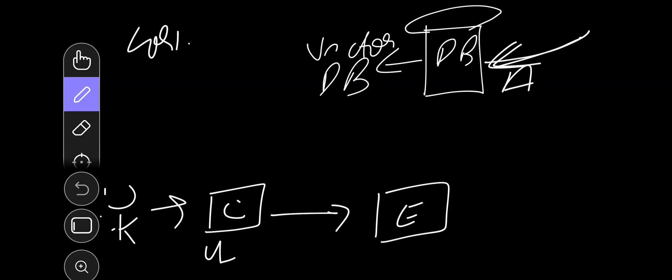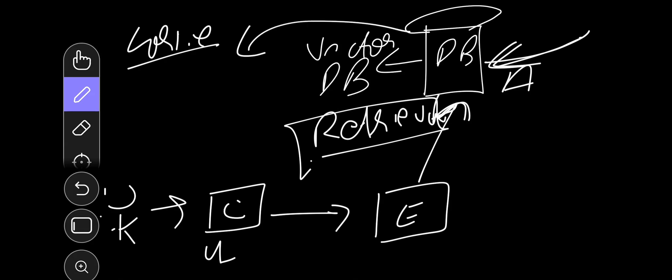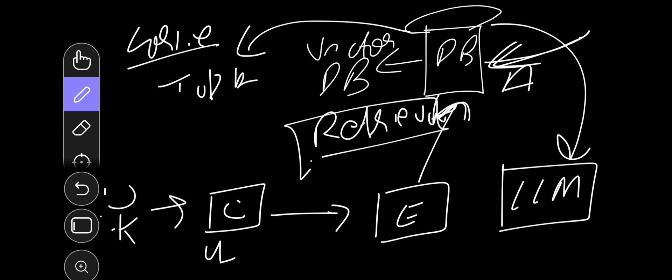For comparing query and answer you need cosine similarity, and for cosine similarity you need both in the same vector space. So you embed both using positional embedding with an embedder. This embedder converts the query into a vector, which then goes to an indexing module — a retrieval engine. The retrieval engine takes out the top-K results and gives them to your LLM.